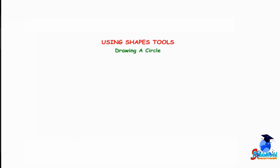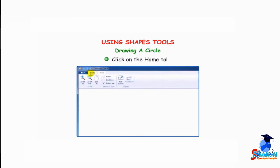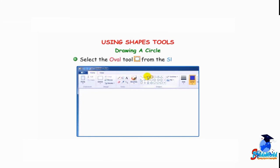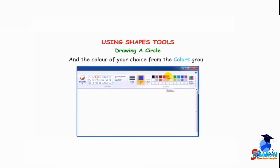Drawing a circle: Click on the Home tab. Select the oval tool from the Shapes group and the color of your choice from the Colors group.